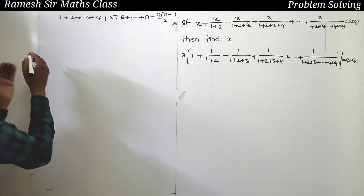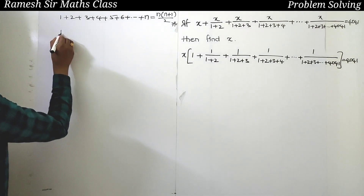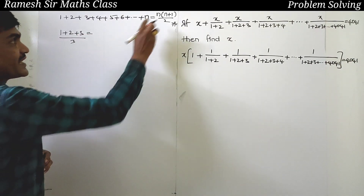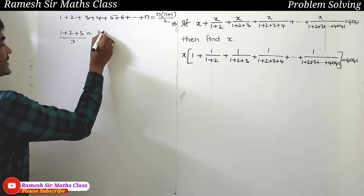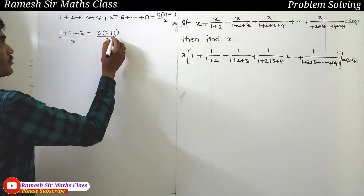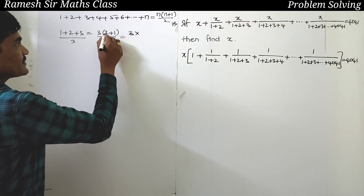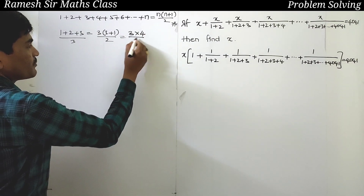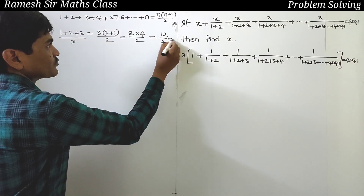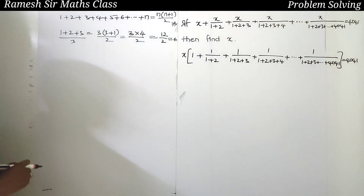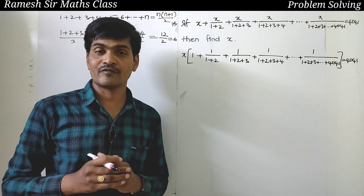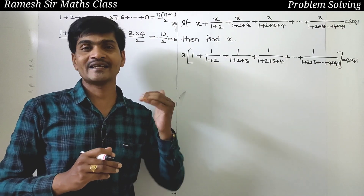For example, for the first 3 natural numbers, that is 1 plus 2 plus 3. Using the formula, substituting n equals 3, we get 3 into (3+1) divided by 2, which is 3 into 4 by 2, which equals 6. And indeed 1 plus 2 plus 3 equals 6. So, the formula for the sum of first n natural numbers is n(n+1)/2.